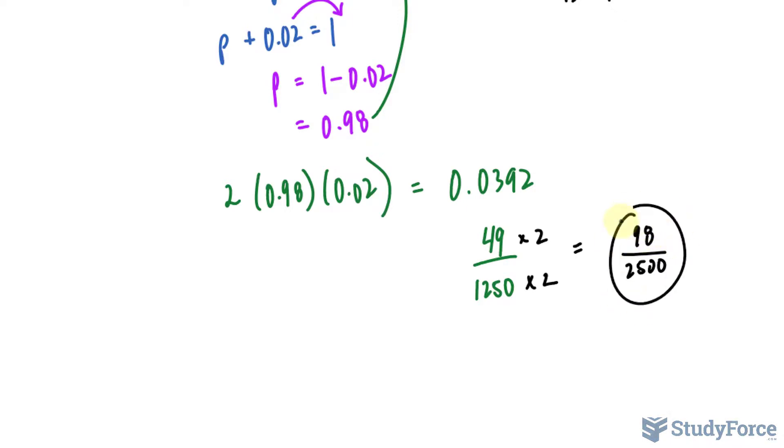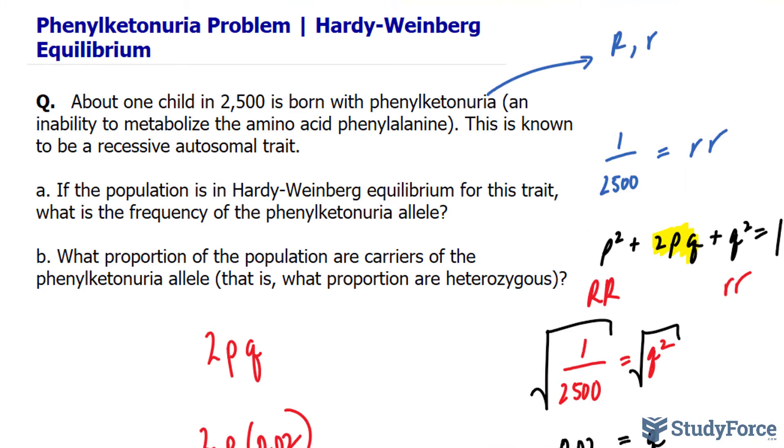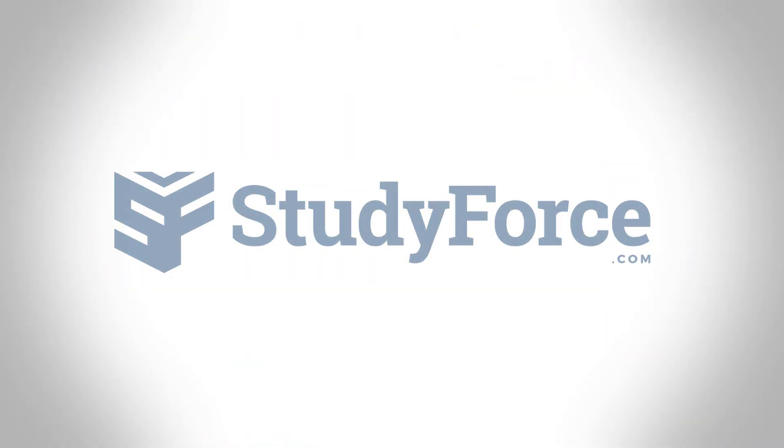So this fraction gives us a better representation relative to what we were given at the beginning, where 1 in 2,500 actually have it, and 98 out of 2,500 are carriers only. If you would want this as a percentage, all you would do is multiply it by 100% and you would find out that 3.92% of the population are carriers as well. And so there you have it. Now you know how to use the Hardy-Weinberg equilibrium to solve problems like these.